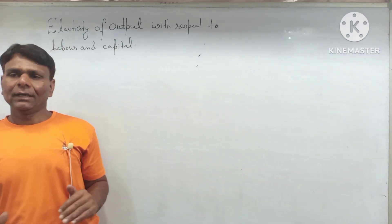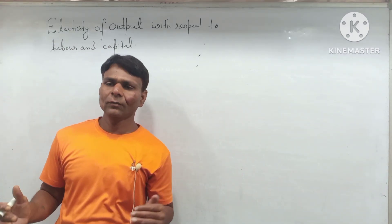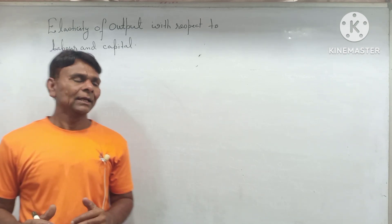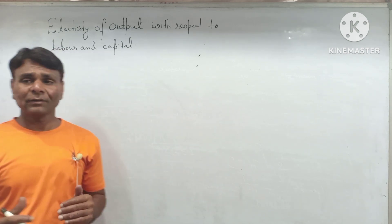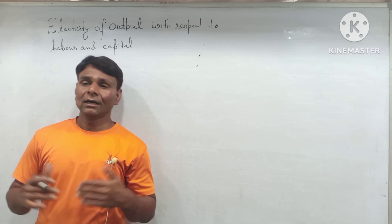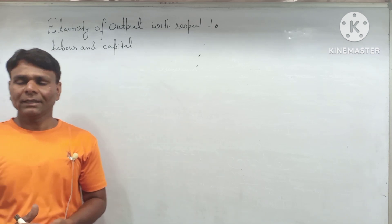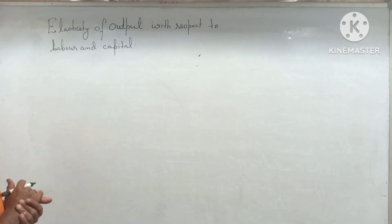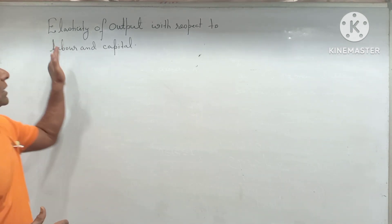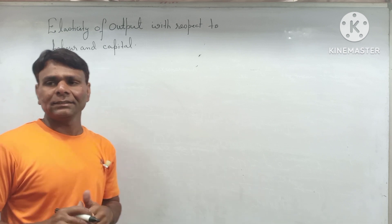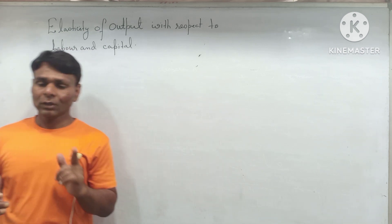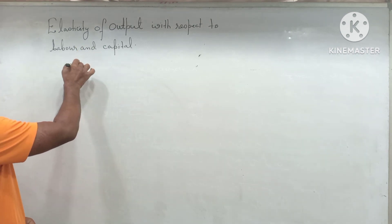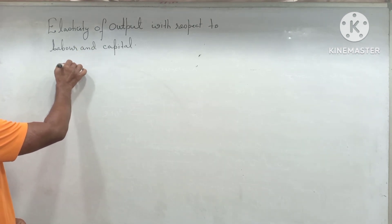Hello friends. Today's video I will discuss elasticity of output with respect to labor and capital. Such type of questions are usually asked in competitive examinations like UGC NET economics paper. First, how to calculate elasticity of production — that is output with respect to labor and capital. Consider a Cobb-Douglas production function.